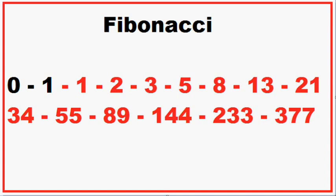Fibonacci is the sum of the previous two numbers, starting with zero and one. We take zero and one, add those together, that gives us one. Then we take the one and one, that gives us two. One and two gives us three, two and three gives us five, and so on towards infinity. This was found many centuries ago in an experiment trying to find a mathematical formula that calculates the birth of rabbits.